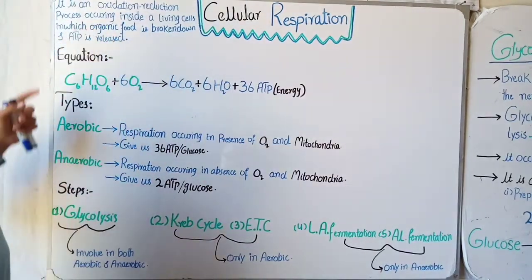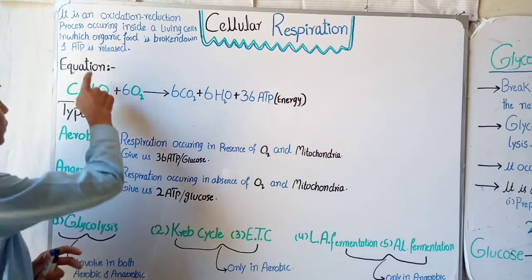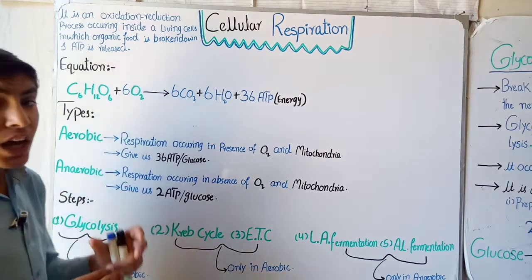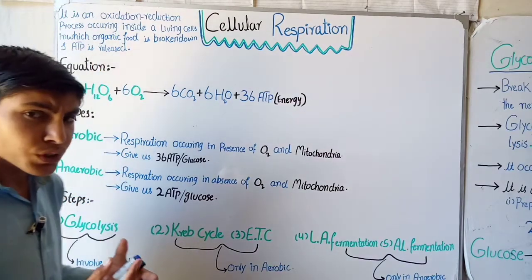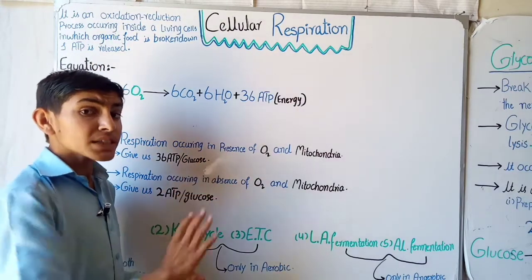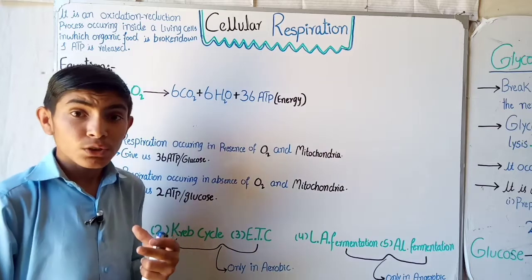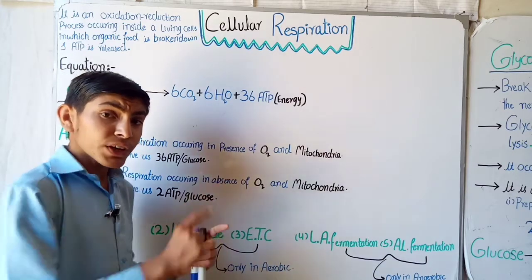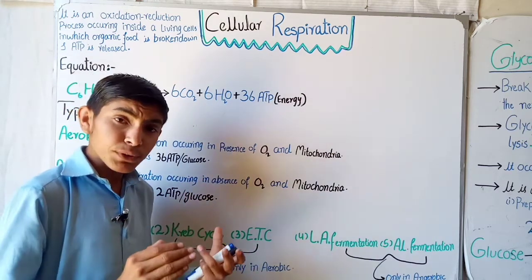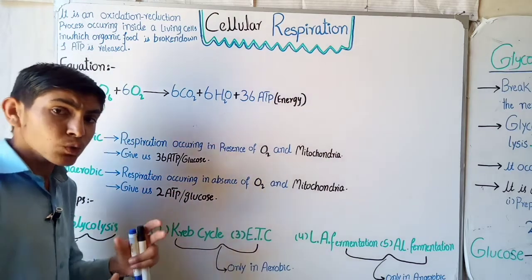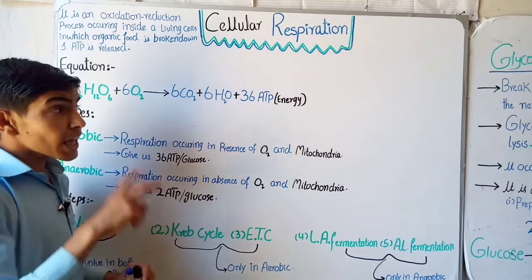If we talk about the definition, cellular respiration is an oxidation-reduction process occurring inside a living cell in which organic food is converted into ATP. The food produced during the process of photosynthesis in the dark reaction will now be converted back into ATP so the cell can use it. Cellular respiration occurs in both plants and all other living animals.